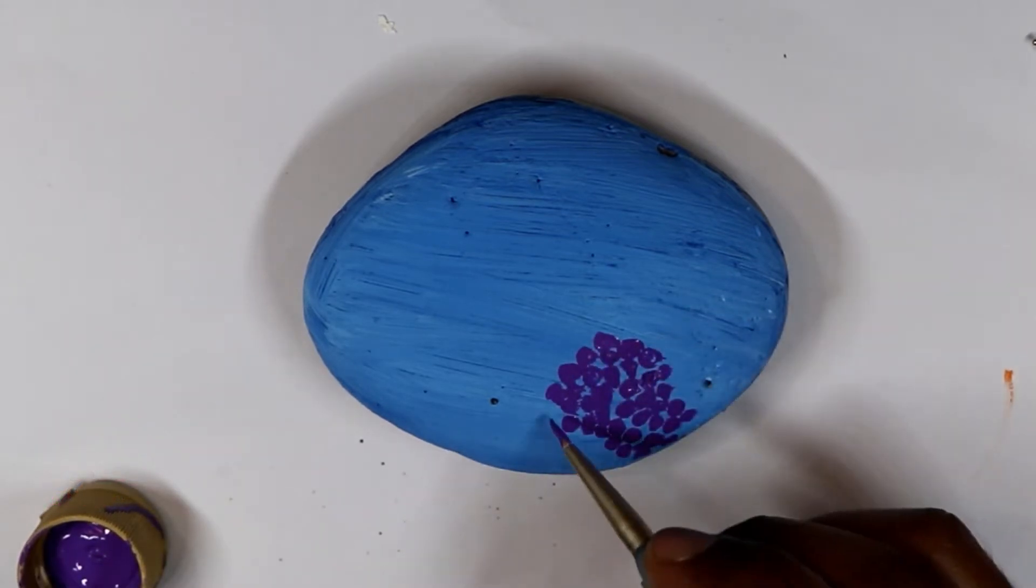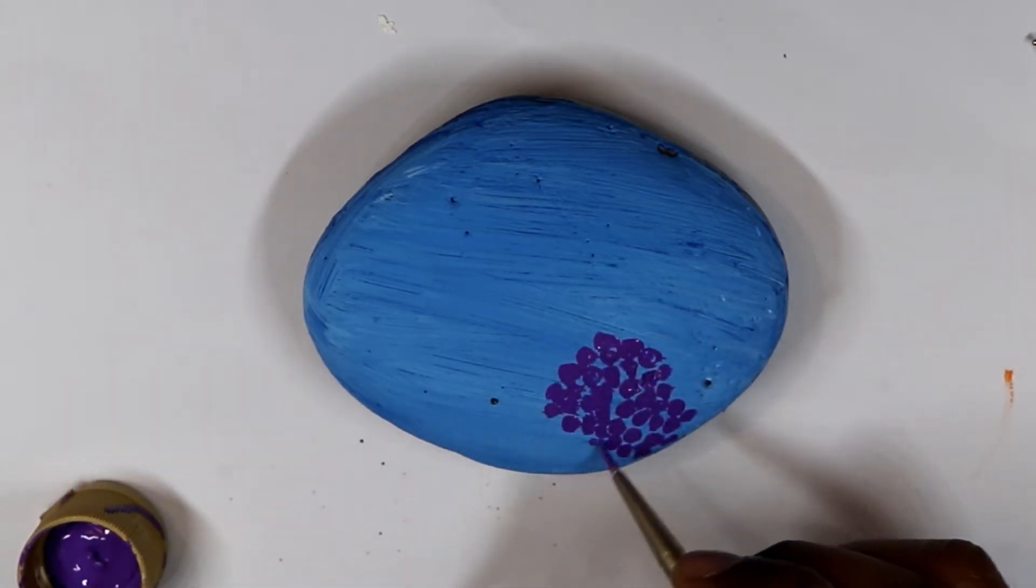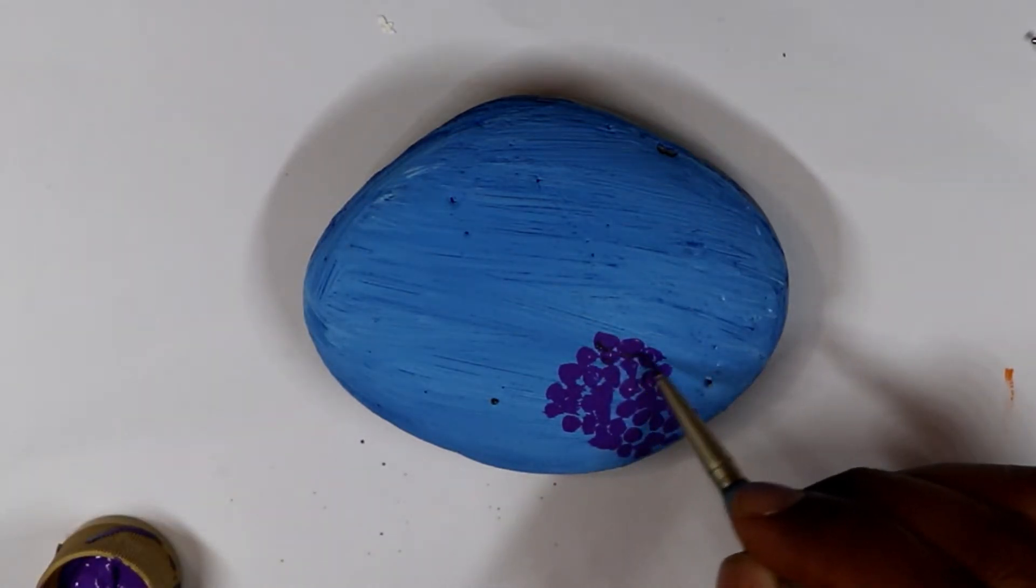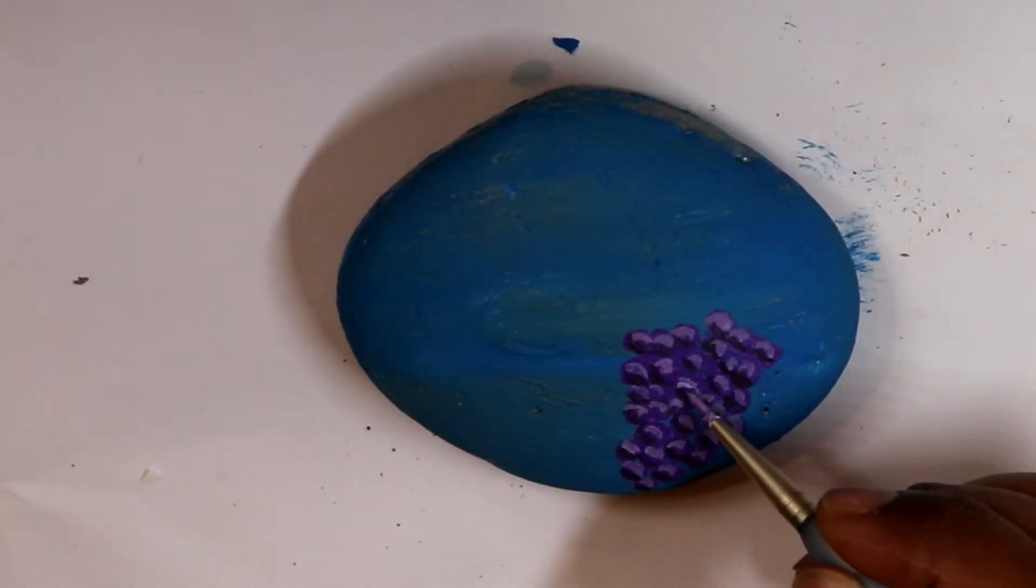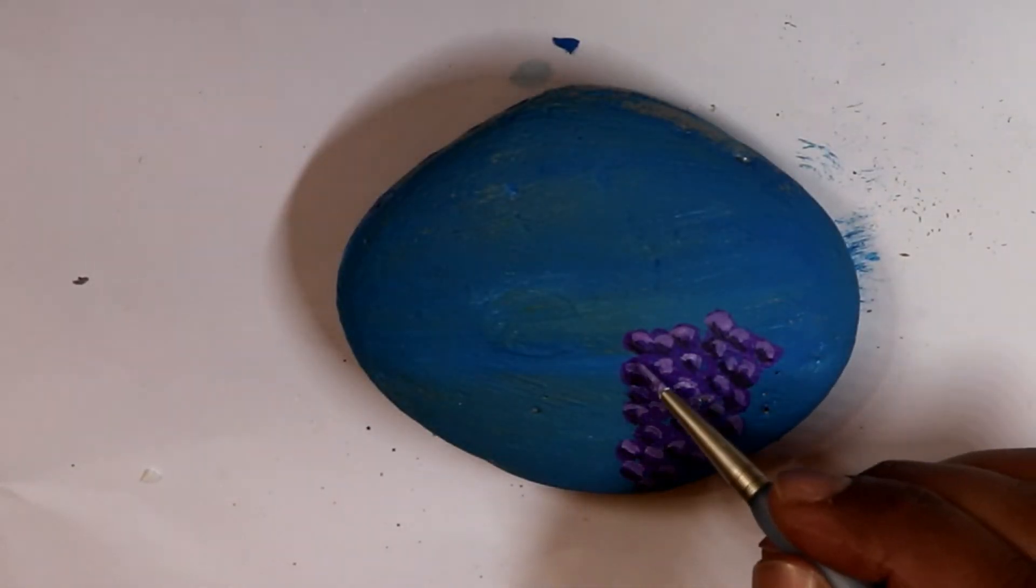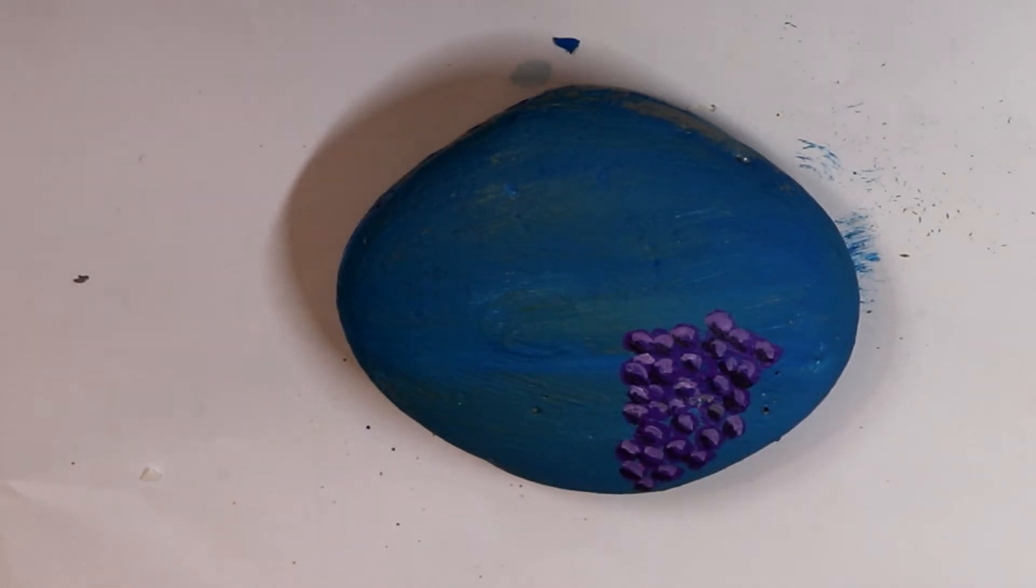I used purple paint to do the grapes. My camera turned off—I guess it was the battery. You just lighten up the purple color and start doing the shading on the spheres, meaning on the grapes.